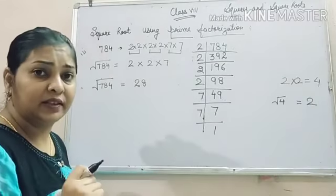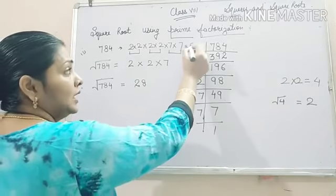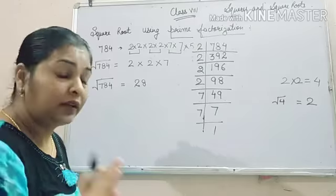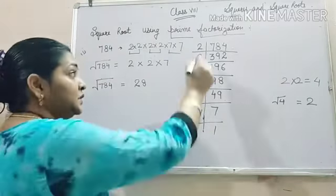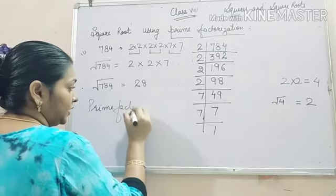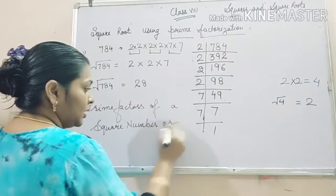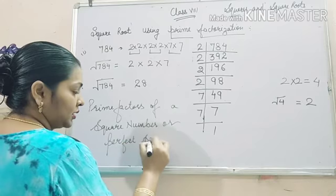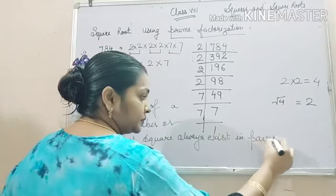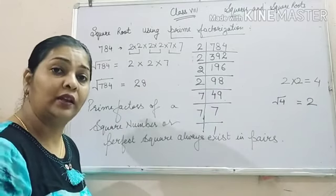Now, sometimes question arises in the mind of the students. What if we don't have pairs? Suppose there is one more number as 5. Then, always remember it won't be a perfect square or it won't be a square number. A number to be square number, its prime factors should always exist in pair.